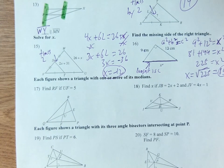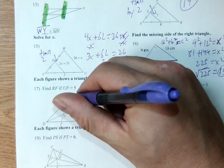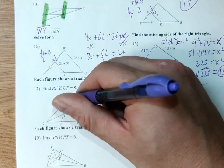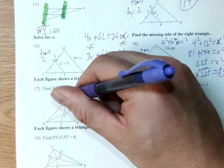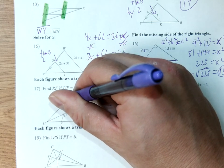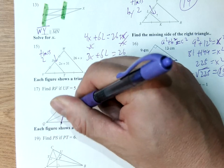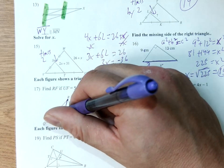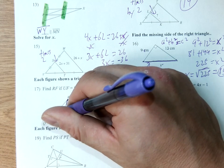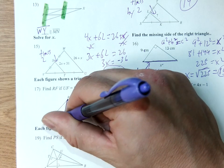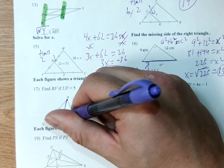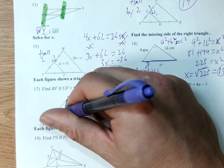Find RF if UF is 5. So R to F, is it the whole length, is it the third of the length, or is it the half, is it the two thirds of the length? R to F is the whole thing. That's what we're looking for. We were given UF, this length is 5. From here to here.